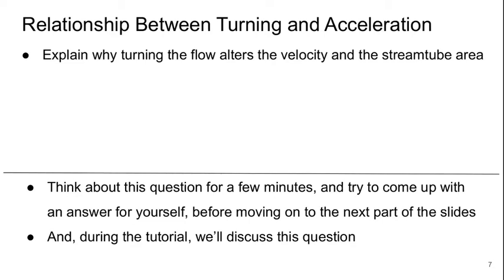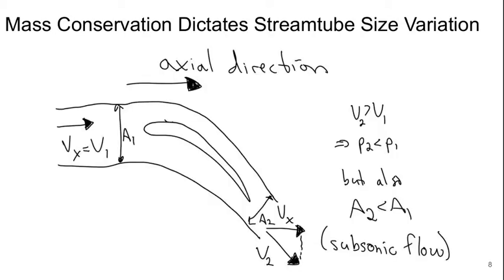Welcome to Part 2 of Lecture 15 of Aerospace Propulsion. We left off with this question of why it is that turning the flow alters the velocity and stream tube area.